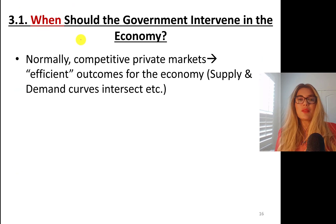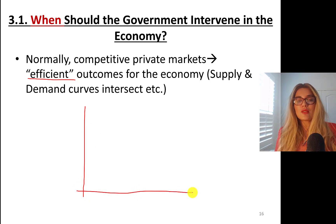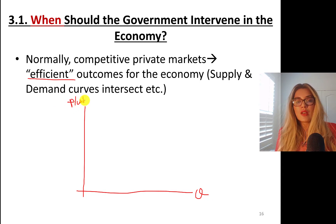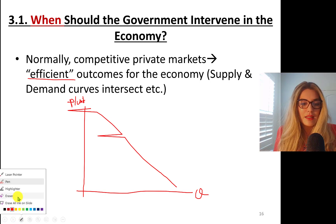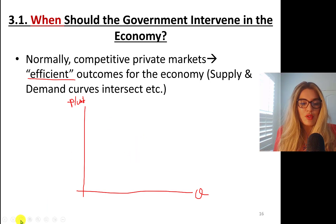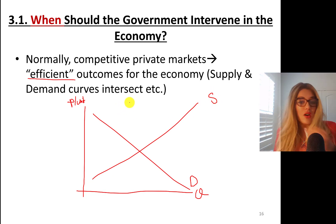When should the government intervene in the economy? Normally, competitive private markets yield efficient outcomes — economically efficient outcomes. This is the quantity of a good or service sold versus price per unit. This could be quantity of cars sold. You have a demand curve that is downward sloping.